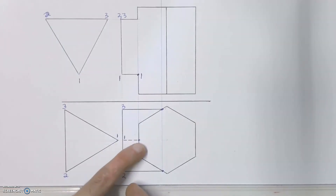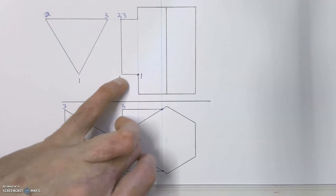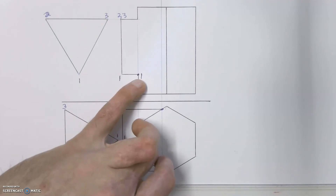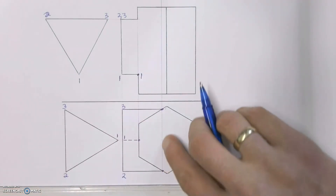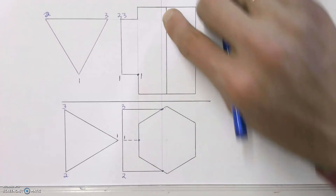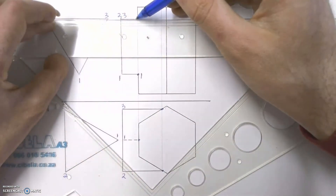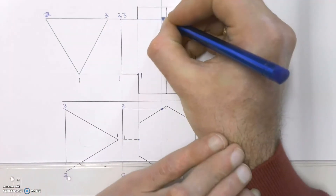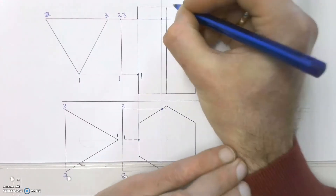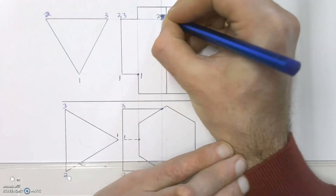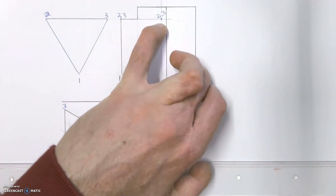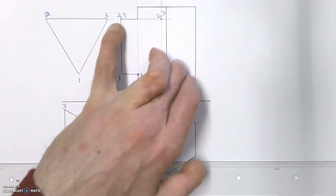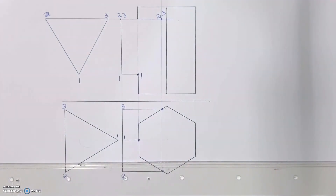Now we follow the numbers in the front view and link them up with our termination points. There's point one — we take it up and line it back up with point one in the front view, giving us that termination point for line one. Then we do the same with two and three — they're actually in line with each other and they line up together in the front view as well, giving us the termination point for lines two and three. Termination points are complete.